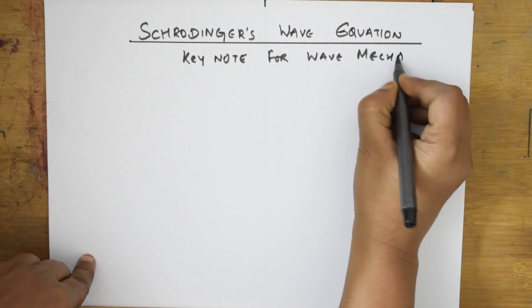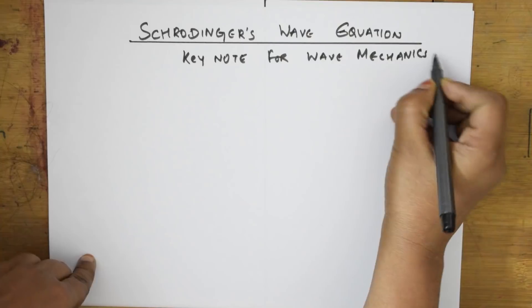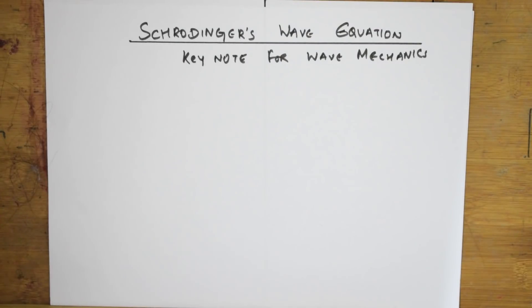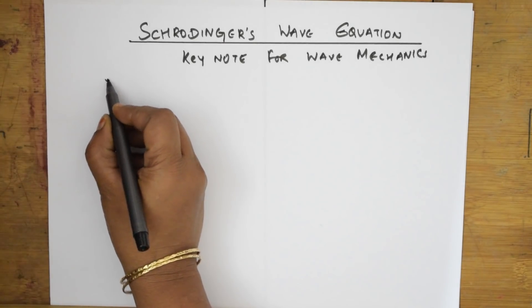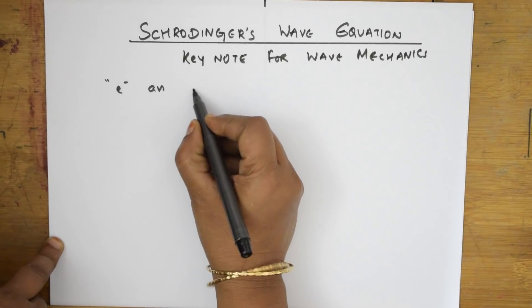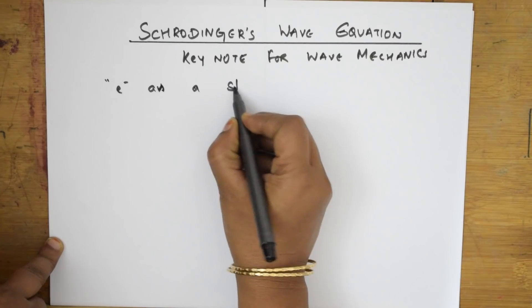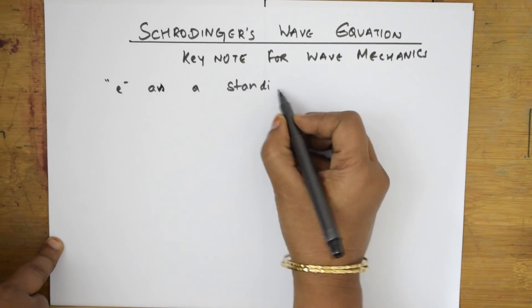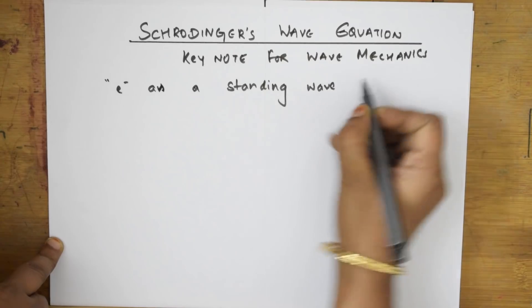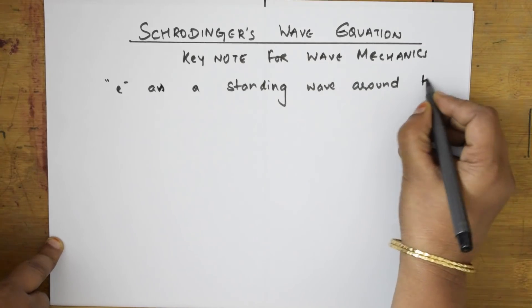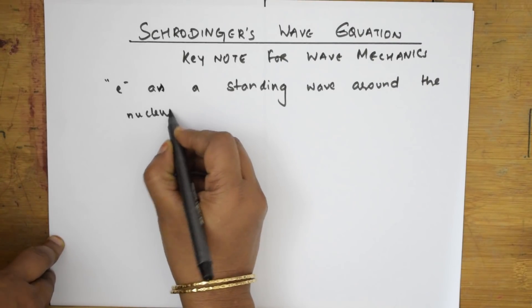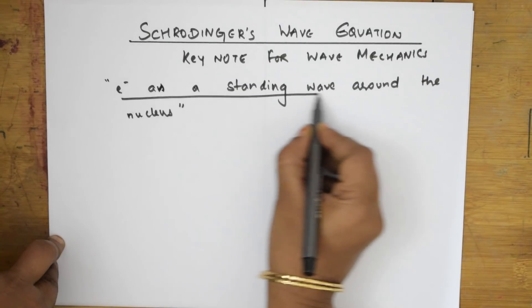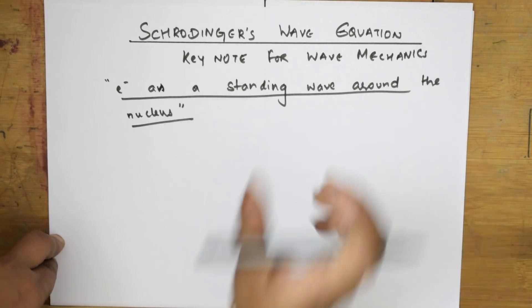We go step by step according to Schrödinger. What did he consider? He considered the electron as a standing wave around the nucleus. This is the most important concept. With this concept only, he started deriving the whole derivation around the nucleus.